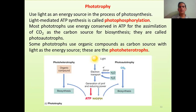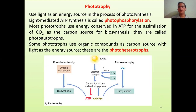The third category is the phototrophs. These use light as an energy source in the process of photosynthesis. This light-mediated ATP synthesis is called photophosphorylation. Most autotrophs use energy conserved in ATP for the assimilation of CO2 as the carbon source — these are called photoautotrophs. Some phototrophs use organic compounds as a carbon source with light as the energy source — these are called photoheterotrophs.